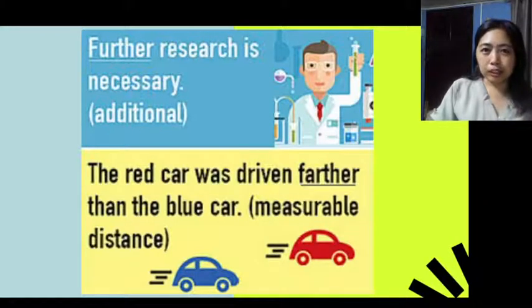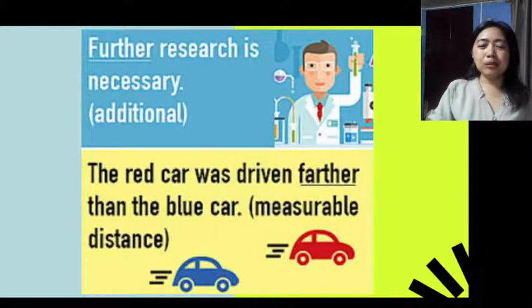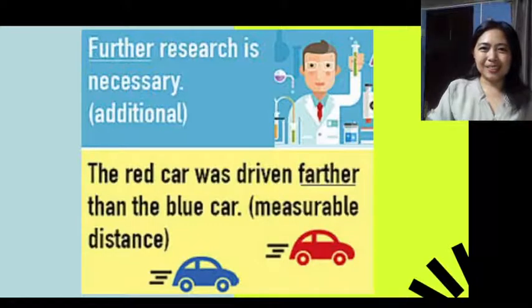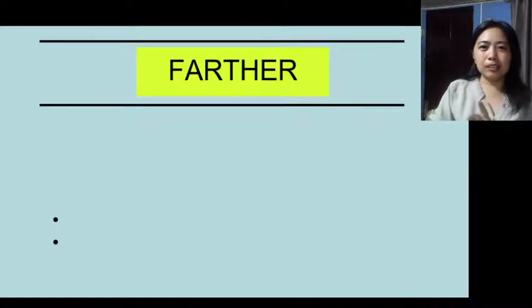So it is measured by distance. As you can see, the red car is here and the blue car is here, so you can check the distance, the measure of its distance. I hope that is clear. Further here is a distance that has been measured.